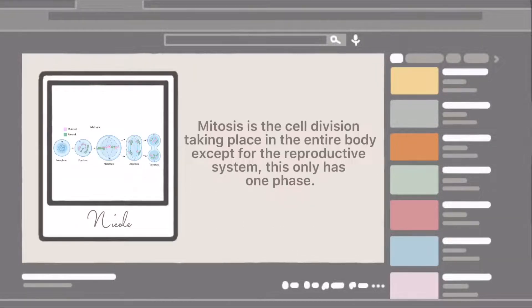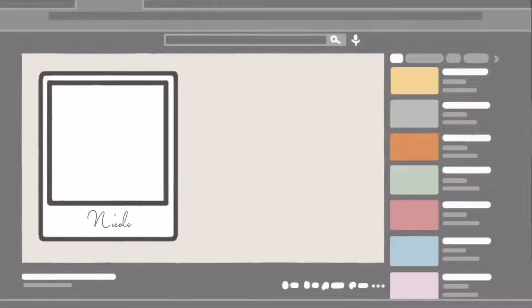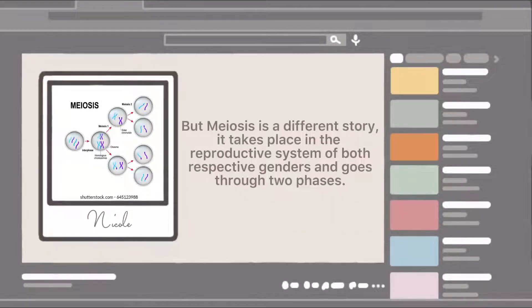Mitosis is the cell division taking place in the entire body except for the reproductive system. This only has one phase, but meiosis is a different story. It takes place in the reproductive system of both respective genders and goes through two phases.